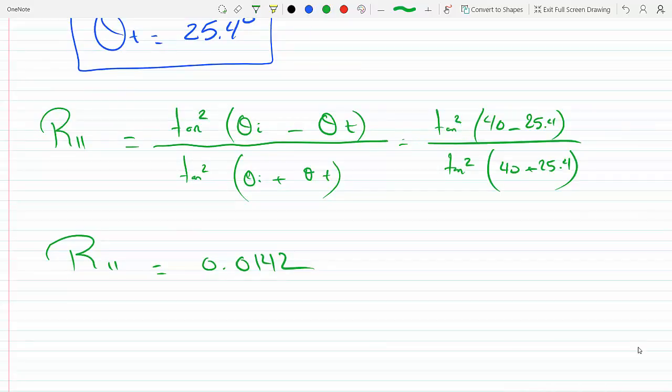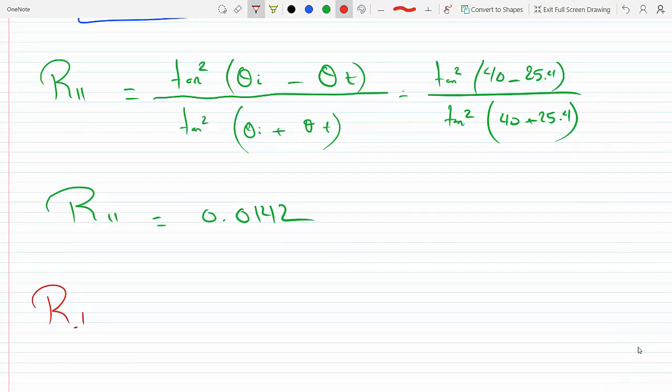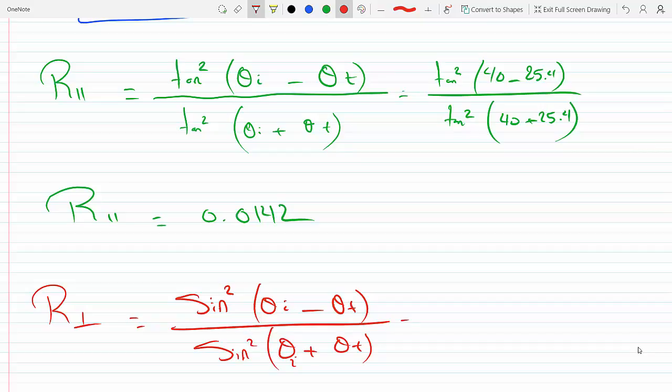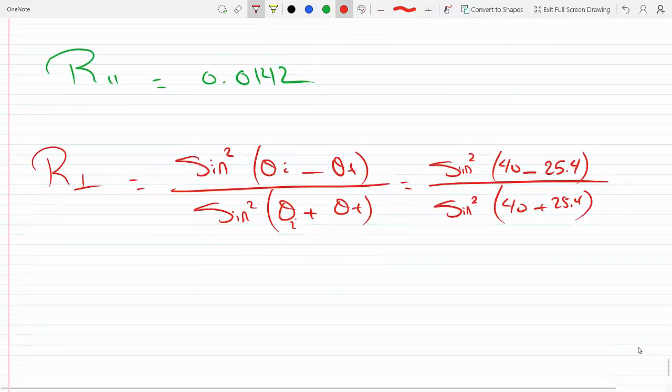Now I will find R⊥, which is when the E field is perpendicular to the plane of incidence. From Fresnel's equations, that's sin²(θᵢ - θ₂) over sin²(θᵢ + θ₂).